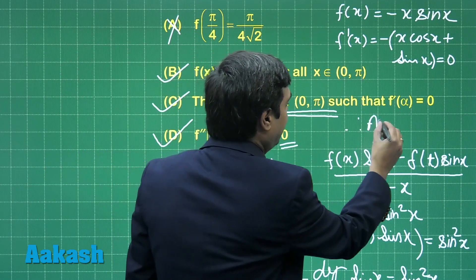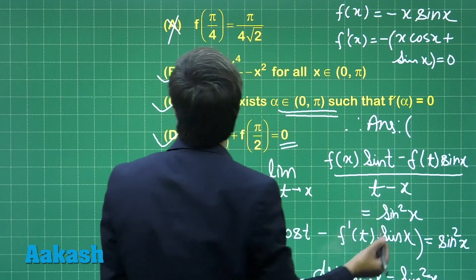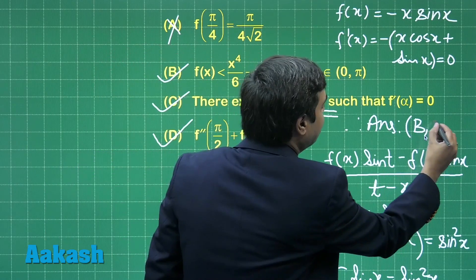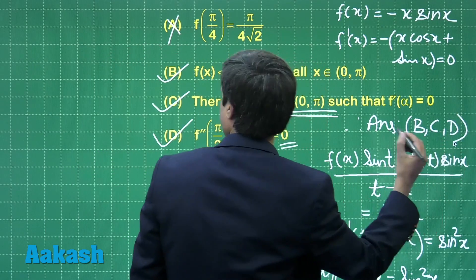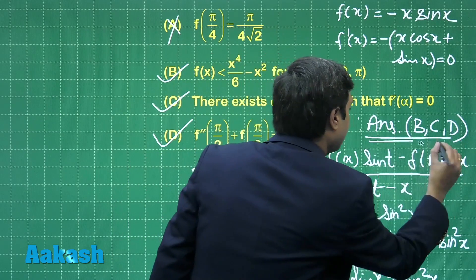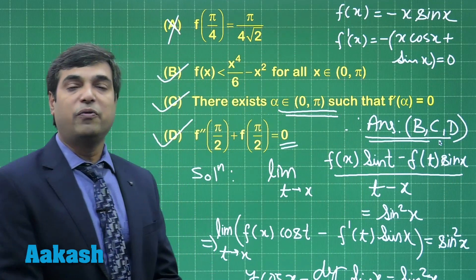So f(x) < x⁴/6 - x², meaning that this is the correct option. Therefore, we finally obtained the answer for this question as option B, C, and option D. This is clear. Now moving to the next question.